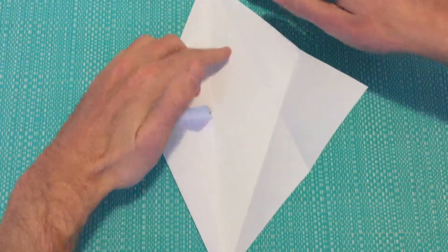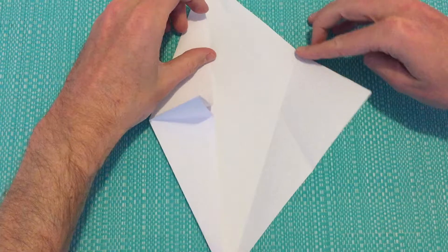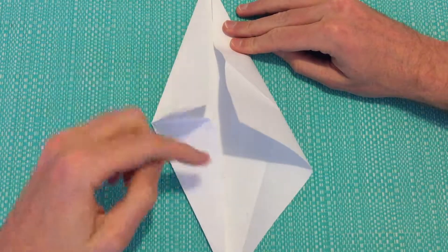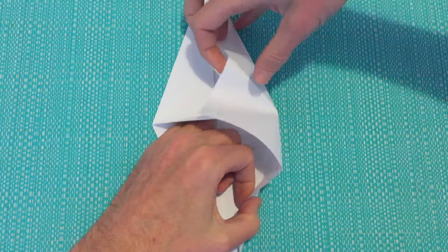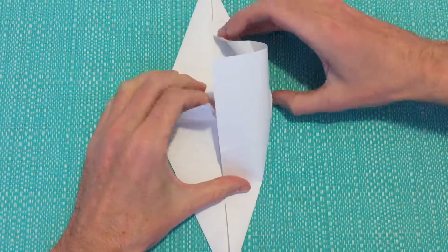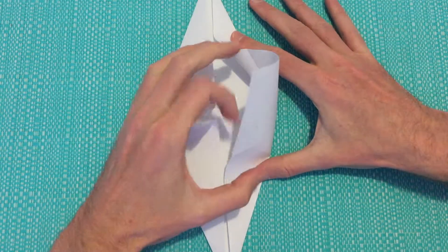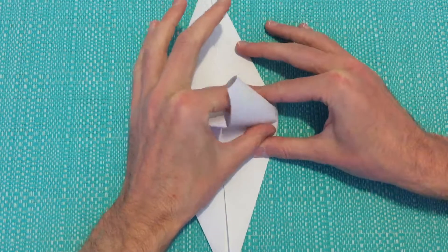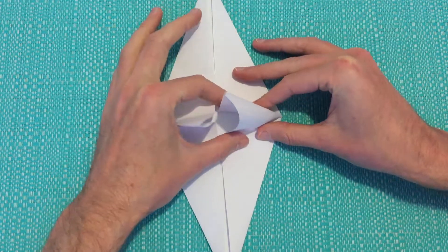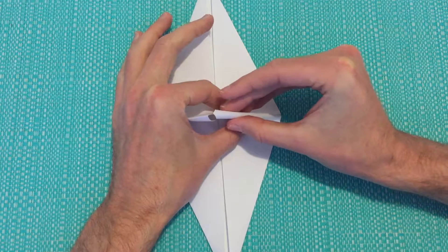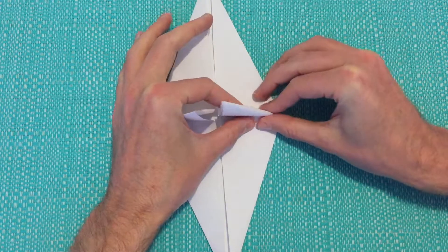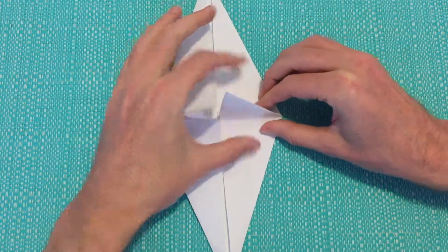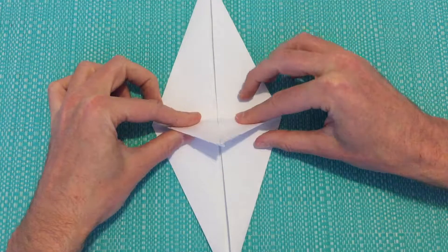So we should just have a small flap left. Then we'll do the same for the right hand side. Firstly bringing this edge here towards the center, and then the bottom right edge also towards the center. Then we'll slowly move our fingers towards the middle, leaving us with that flap. Create a little crease on. Now we've got a little flap on each side.